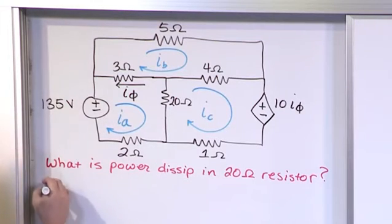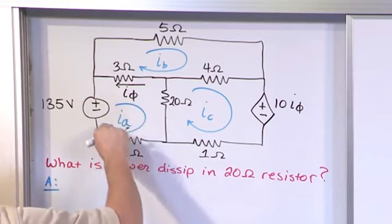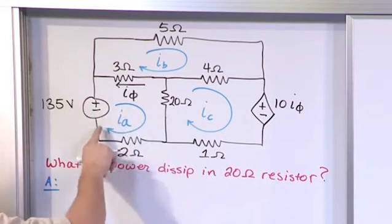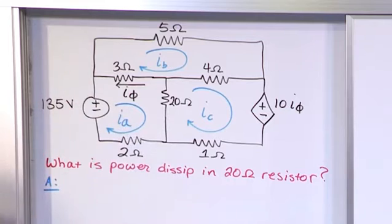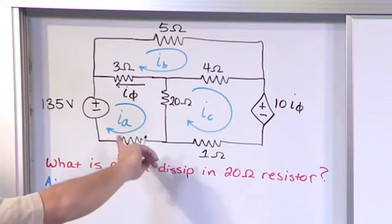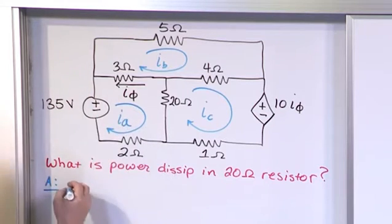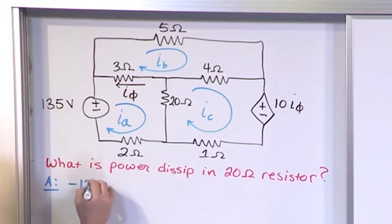Let's go ahead and deal with mesh A first. This is mesh A and we're going to walk around clockwise like this. When we go through the 135 volt source, we're traveling from negative to positive, so that's going to give us a negative in our equations, negative 135 volts. We're summing up the voltages as we go around this mesh.